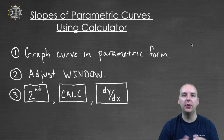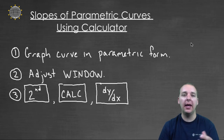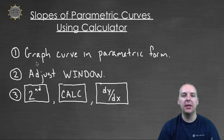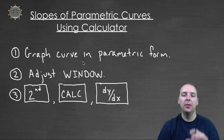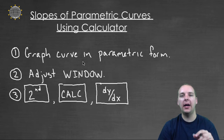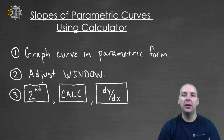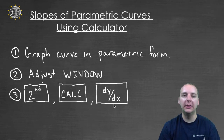In addition to using your TI calculator to graph parametric equations, you can also use it to do a few calculus things like find the slope at a particular point. You just have to go through a few steps. Step one, you already know how to do this: graph the curve in parametric form — put your calculator in parametric mode, enter the x and y functions, adjust the window, and graph it. Then go to Second, Calc, and choose dy/dx.